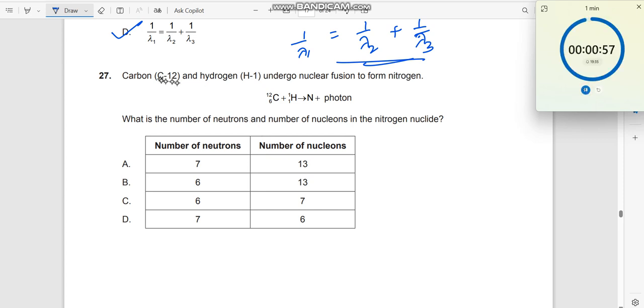Question number 27. C12 and H1 undergo nuclear fusion to form nitrogen, equations given. What is the number of neutrons and number of nucleons in the nitrogen nucleide?